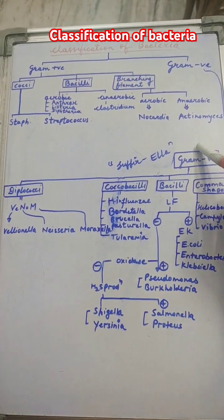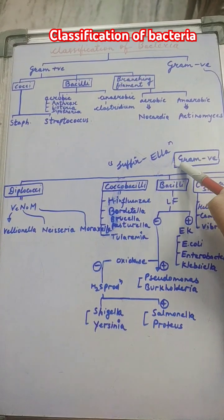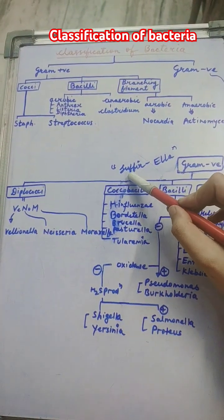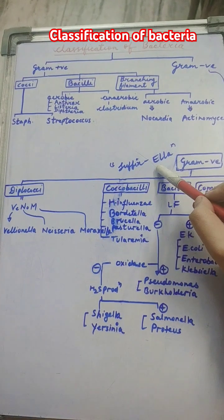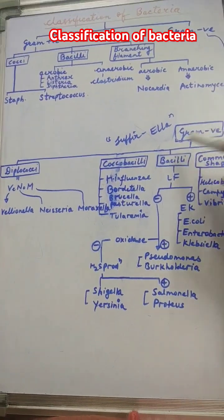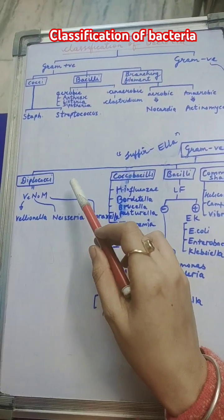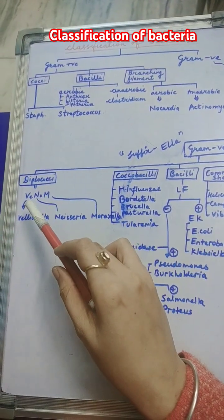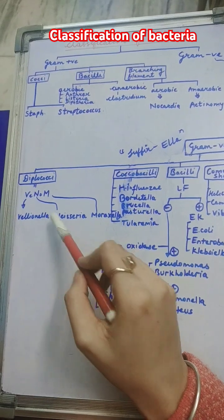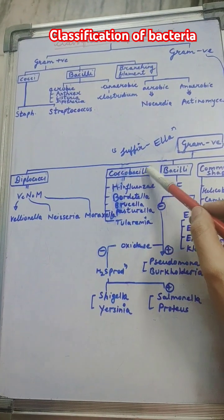For the classification of gram negative bacteria, a useful tip: whichever bacteria has the suffix '-ella' is mostly gram negative. In gram negative diplococci, there is the mnemonic VNM — V for Veillonella, N for Neisseria, M for Moraxella. Then in coccobacilli there is H. influenzae, Bordetella, Brucella, Pasteurella, and Tularemia.